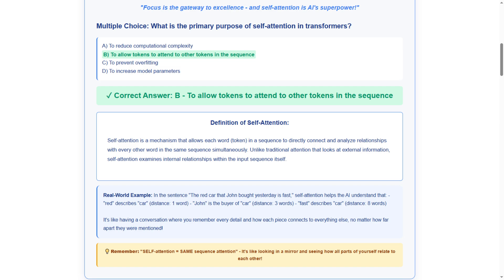Our first question today is about self-attention in transformers. What is the primary purpose of self-attention in transformers? Option A, to reduce computational complexity. Option B, to allow tokens to attend to other tokens in the sequence. Option C, to prevent overfitting. Option D, to increase model parameters.